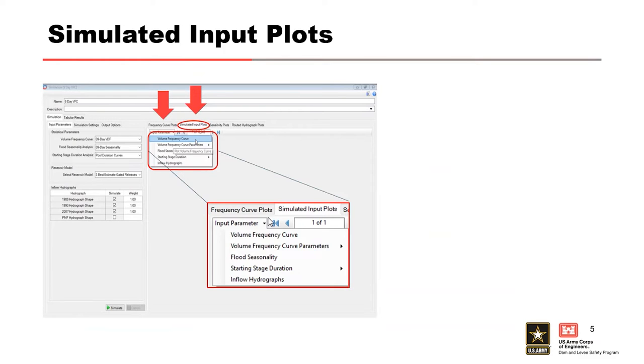The input parameters you can select are the volume frequency curve, the volume frequency curve parameters, the flood seasonality, the starting stage duration, and the inflow hydrographs. These plots will show us all the sampled input parameters generated in your simulation.